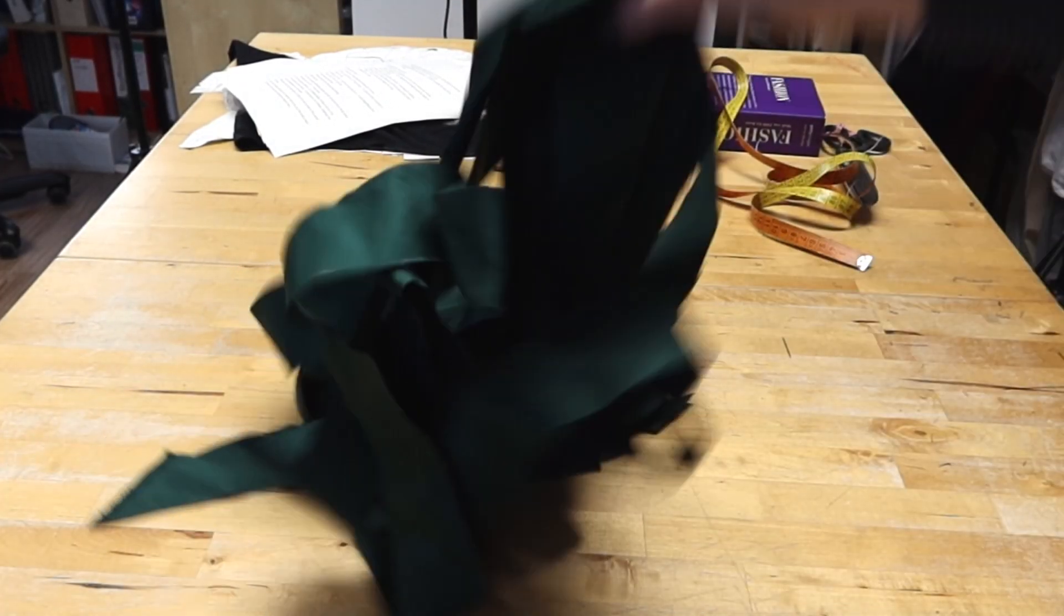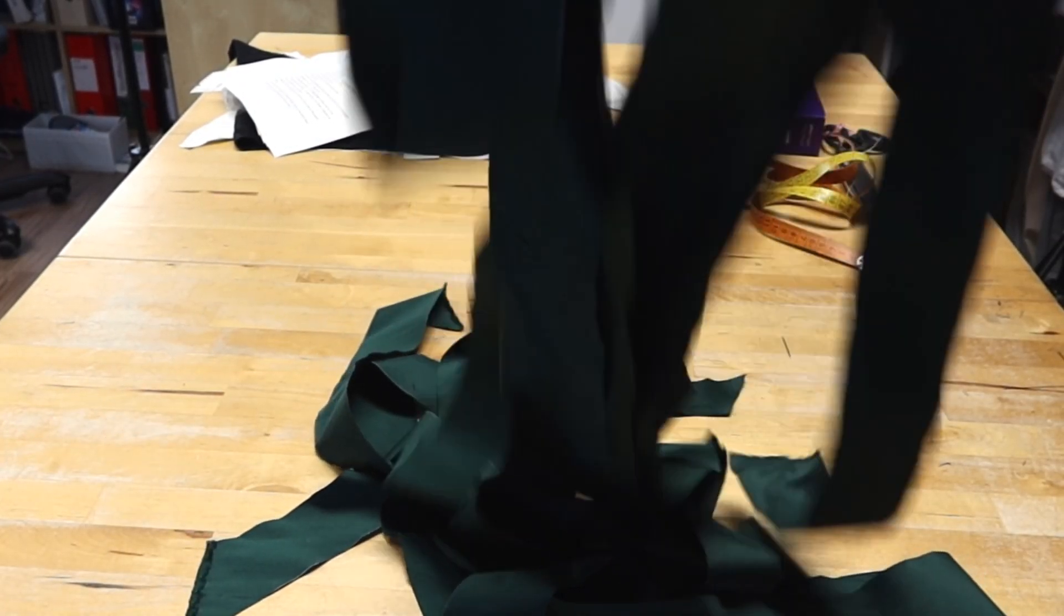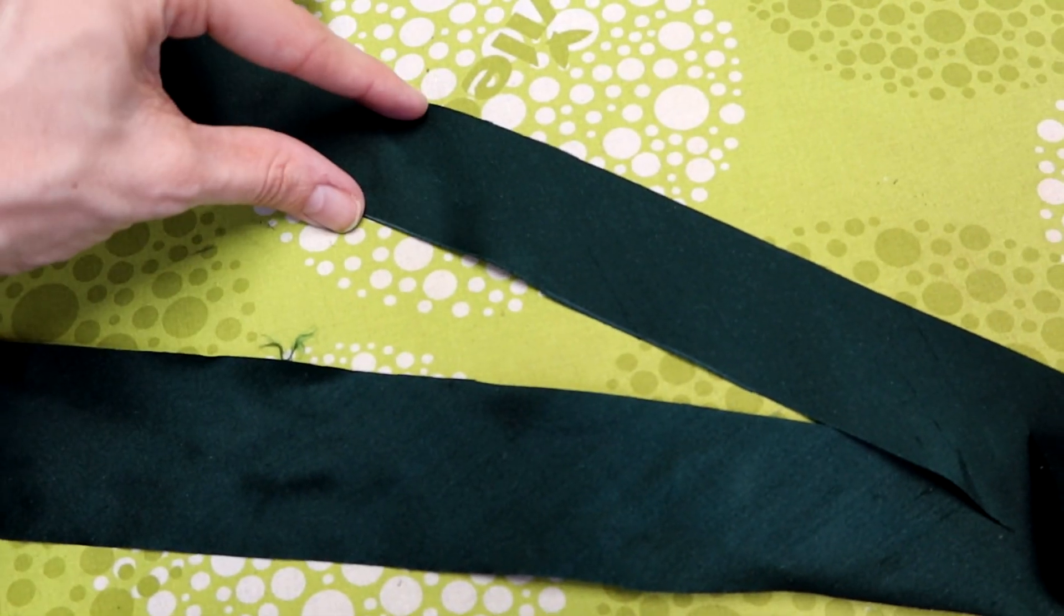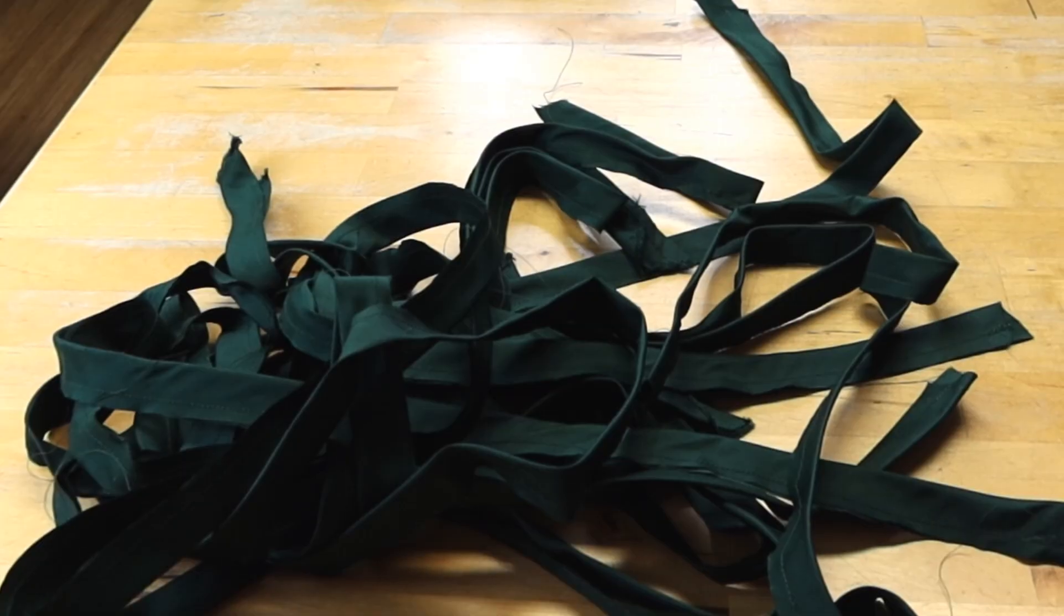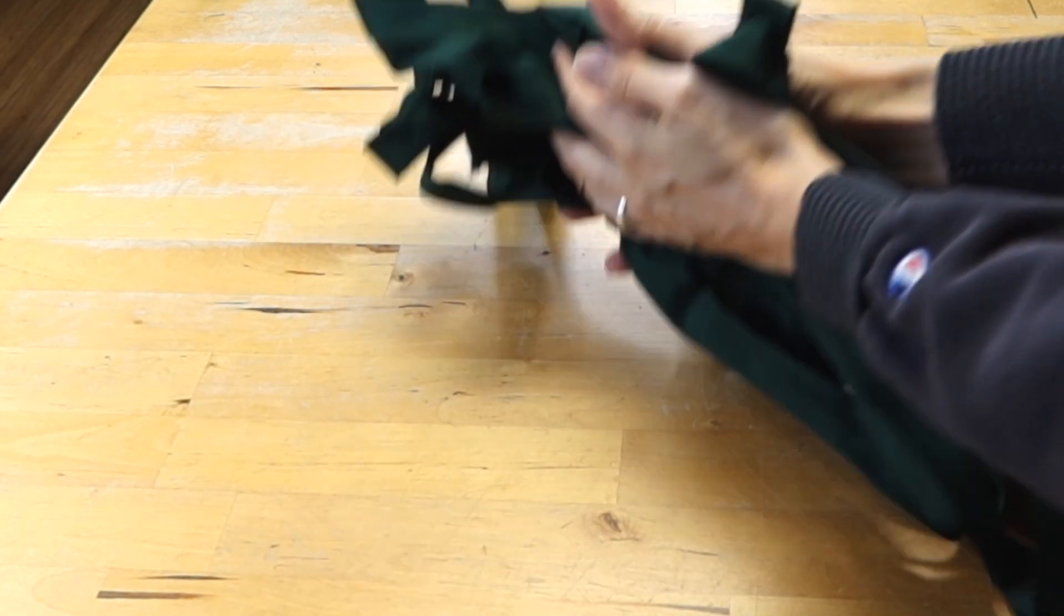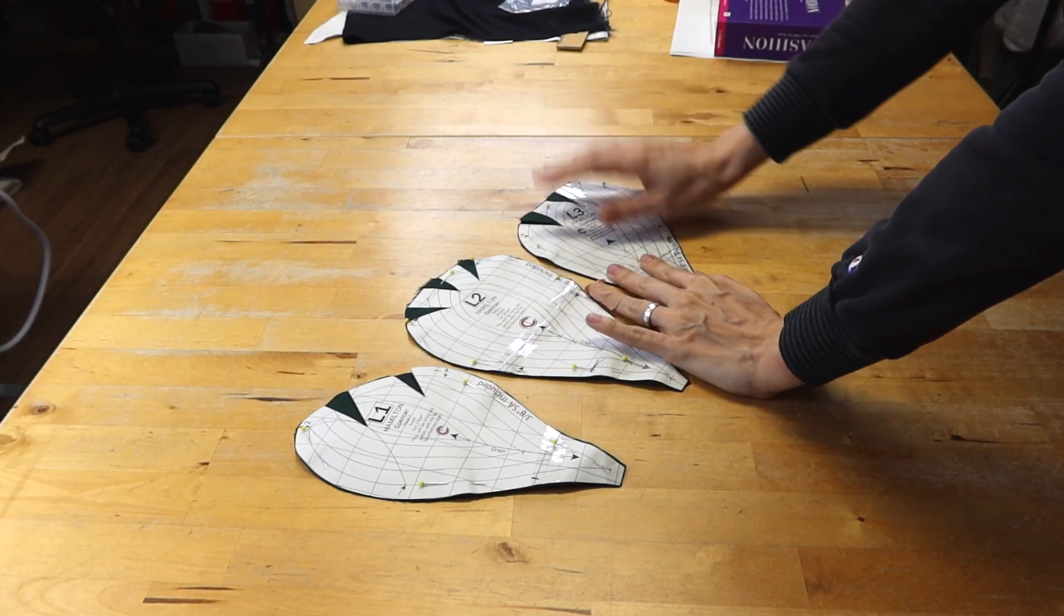Before I could finish the spencer I needed more bias strips. These were also pressed stretched and here you can really see the difference. This time the strips are folded and there's a seam 5 eighths of an inch from the fold.